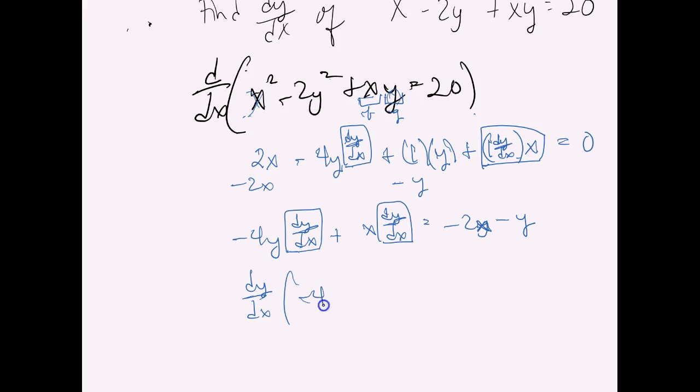Now if you want this isolated, how do you get rid of the thing attached? Well, you divide by it. And so if we divide on that side, negative 4y plus x.